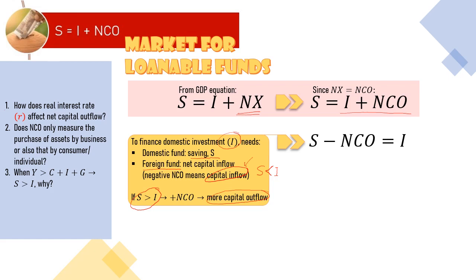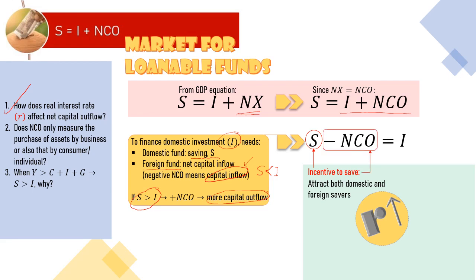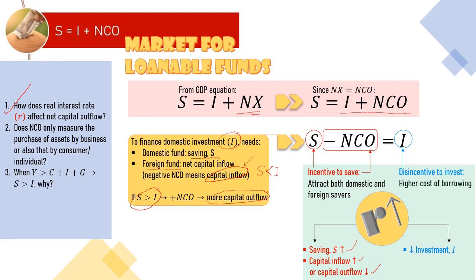How to answer the first question? When real interest rate increases, look at the equation again. Interest rate is an incentive to save. It attracts both domestic and foreign savers, which results in more capital inflow. So higher interest rate will increase saving and capital inflow. More capital inflow means less net capital outflow. On the other hand, for investors, interest rate is cost of borrowing — a disincentive to invest. So higher interest rate means higher cost of borrowing, reducing level of investment. Does NCO only measure the purchase of assets by businesses, or also debt by consumers or individuals? Of course not — net capital outflow will change no matter who purchased the asset.